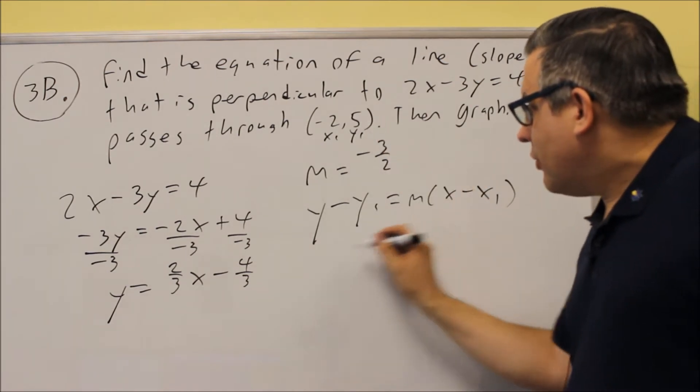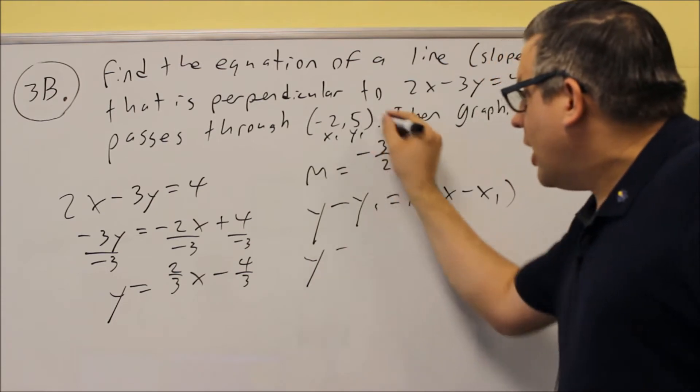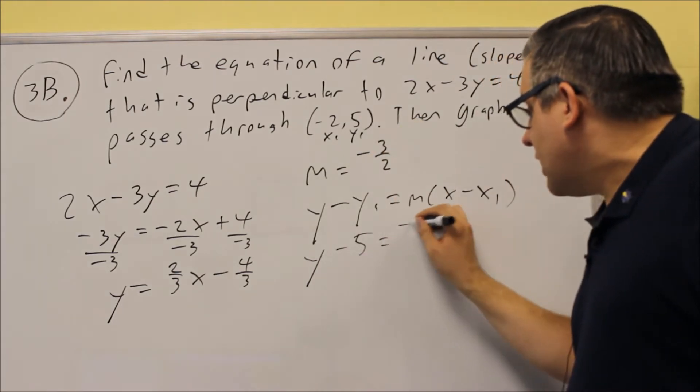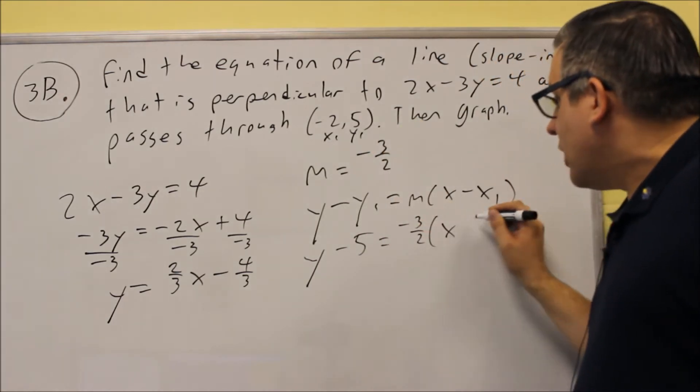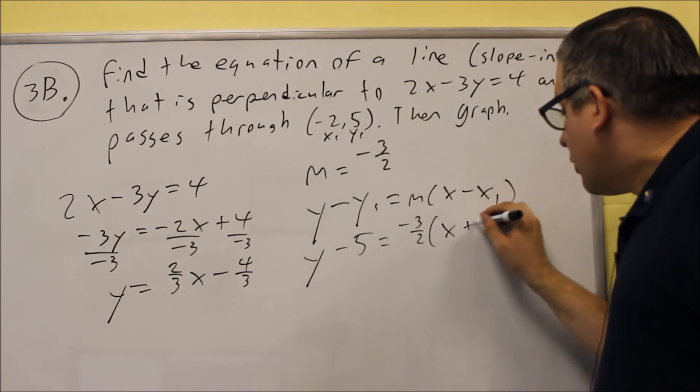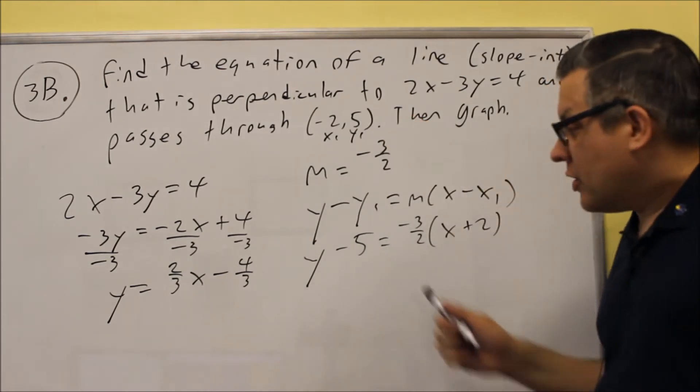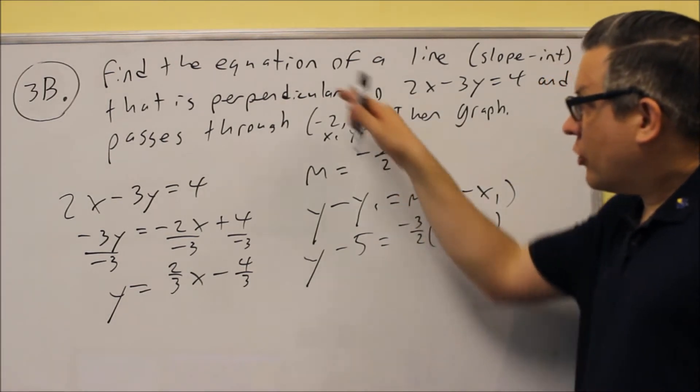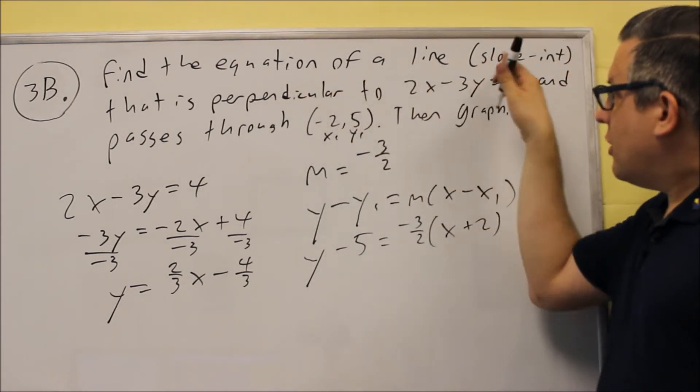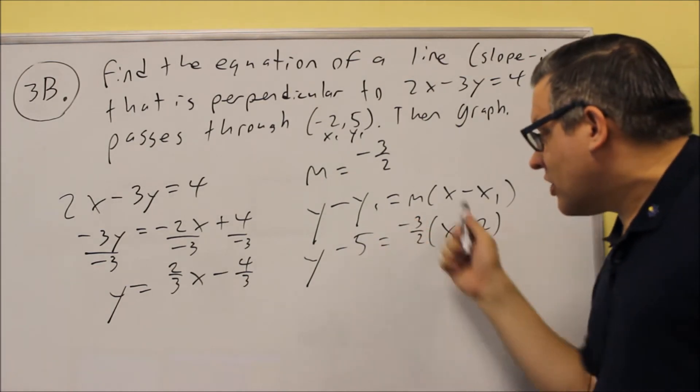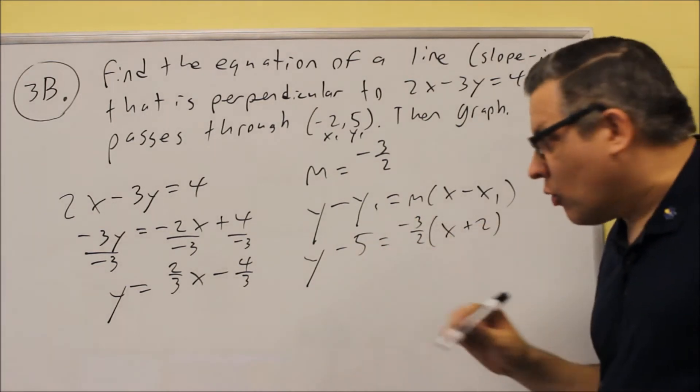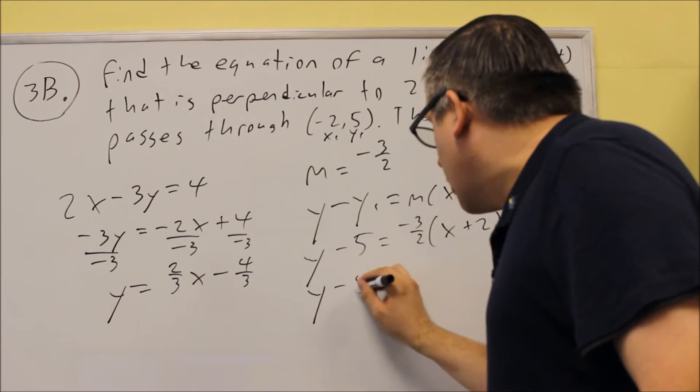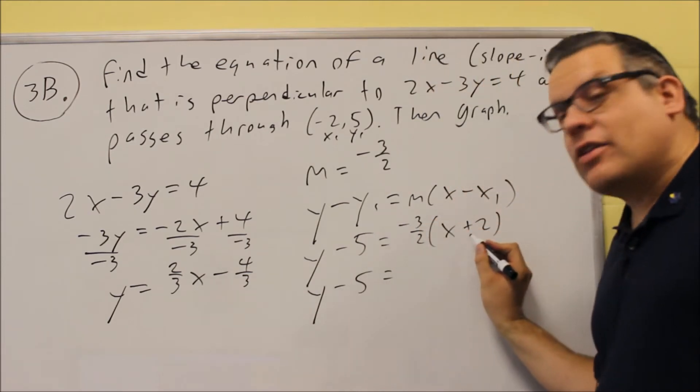We're going to put in the 5 for Y1, negative 3/2, then we have X minus the negative 2 will be plus 2 when we plug that one in. So this is going to be your point-slope formula. Now the original question says find the equation of a line in slope-intercept form, so we still have to take this and solve for Y.